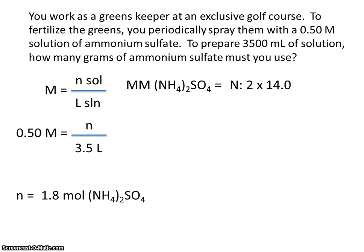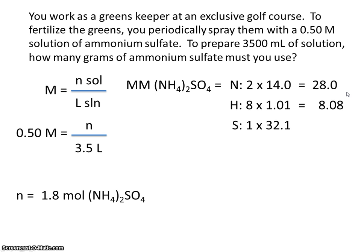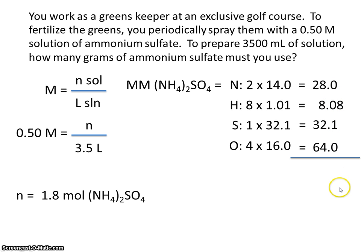We have 2 nitrogens — each nitrogen has a mass of 14, so that's a total of 28.0. We have 8 hydrogens for a total mass of 8.08. We have 1 sulfur for a total mass of 32.1. And we have 4 oxygens for a total mass of 64.0. This number is precise to the hundredths place, but the rest are precise to the tenths place, so our final answer can only be precise to the tenths place. The molar mass of ammonium sulfate is 132.2 grams per mole.